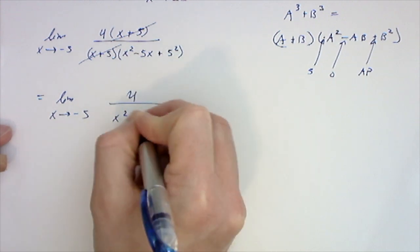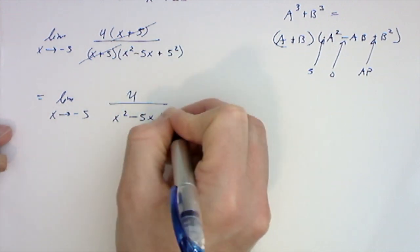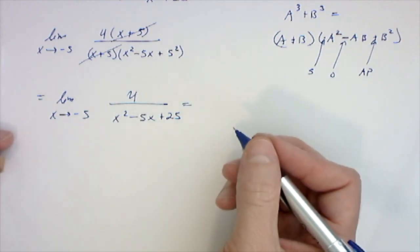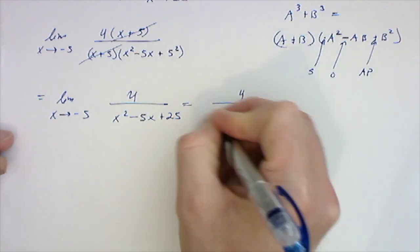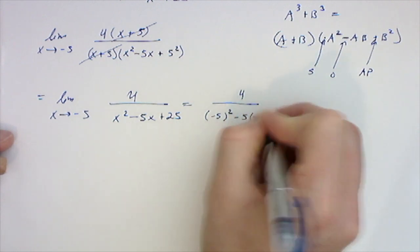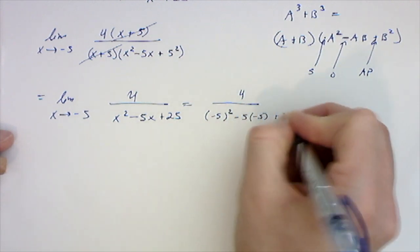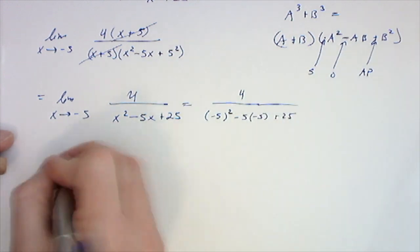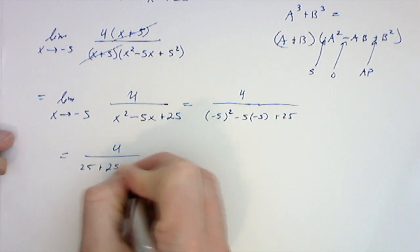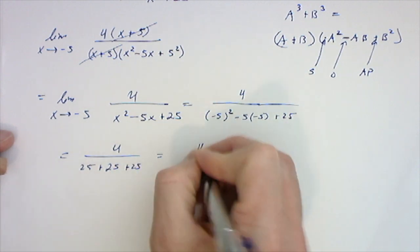Then we can plug in x equal to negative 5 and get 4 over negative 5 squared minus 5 times negative 5 plus 25, which is equal to 4 over 25 plus 25 plus 25, which is 4 over 75.